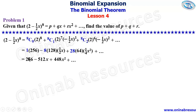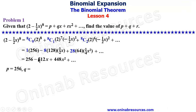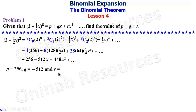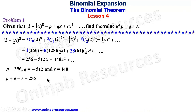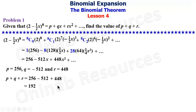Simplifying fully: we get 256, then 8 times 128 times half gives minus 512x, then 28 times 64 times one quarter gives plus 448x squared and so on. It is now clear that p equals 256, q equals negative 512 (the coefficient of x), and r equals 448 (the coefficient of x squared). Adding them: 256 minus 512 plus 448 gives 192. That is the end of the solution to problem one.